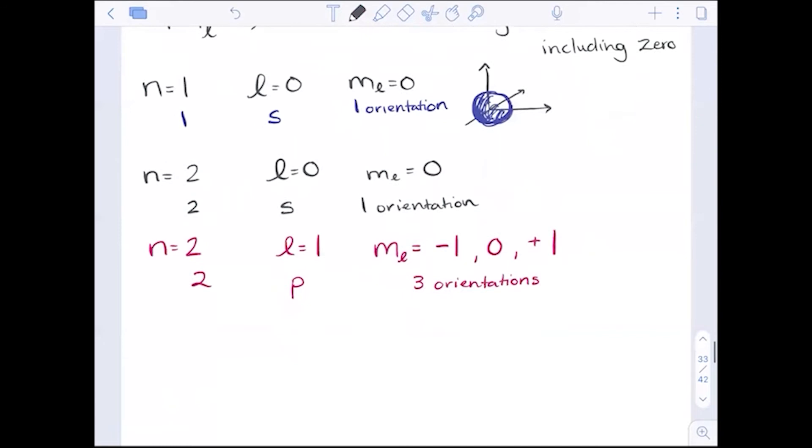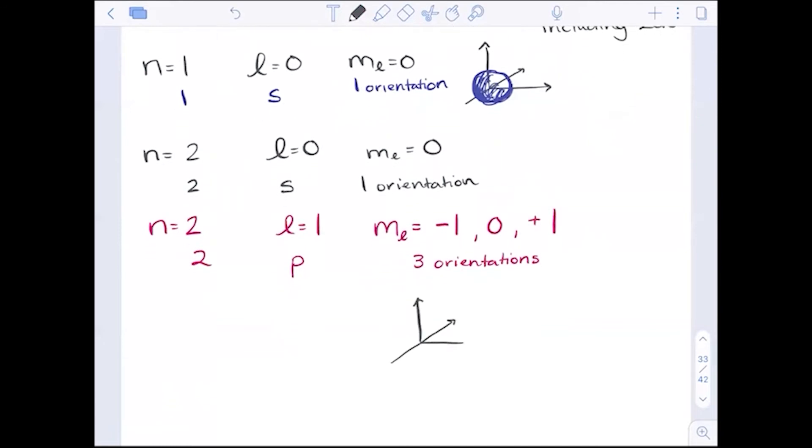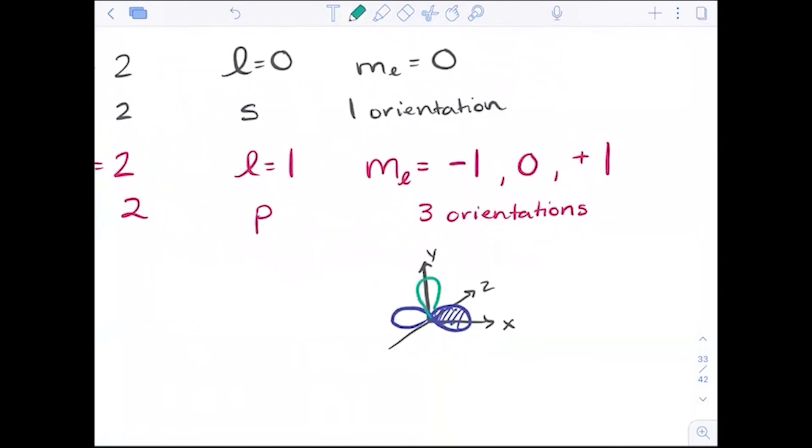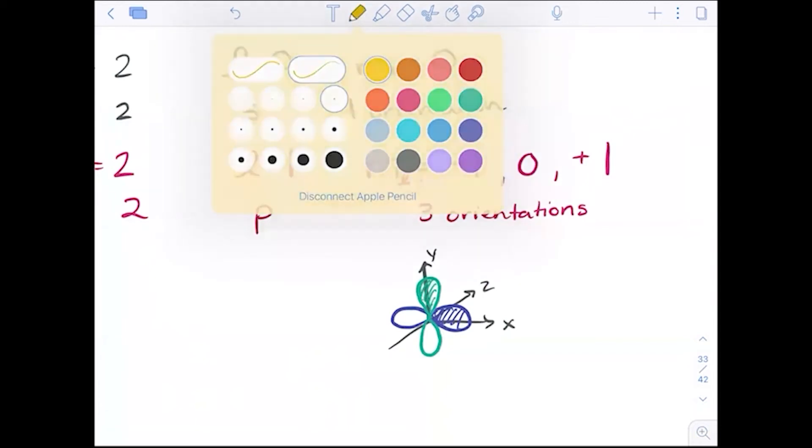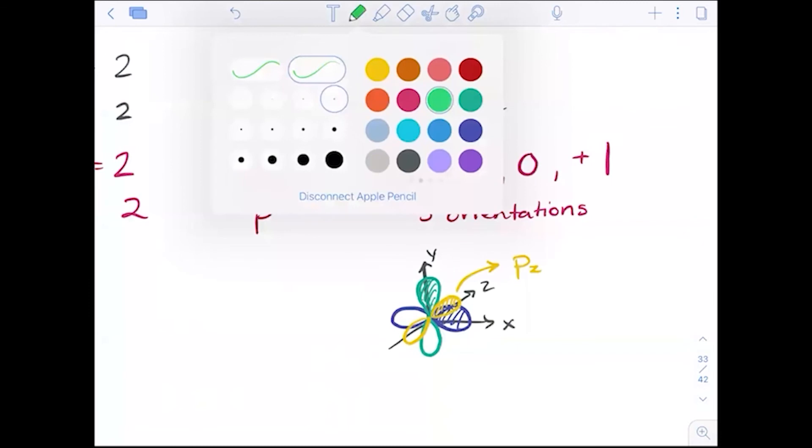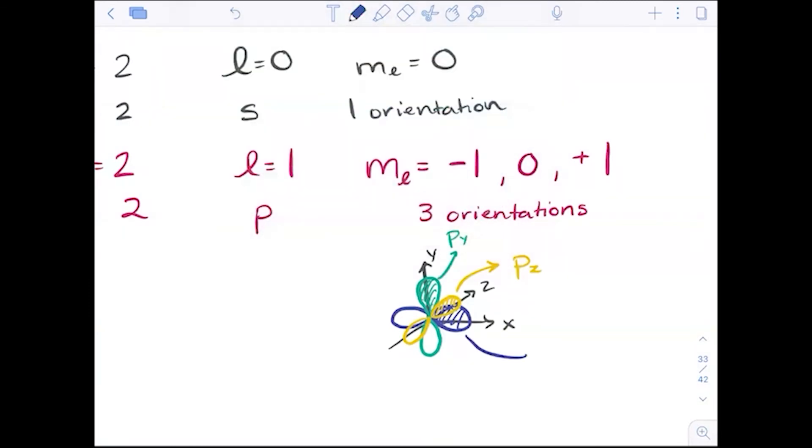What that means for us is if we imagine the p orbitals on an x, y, z plane, I can actually imagine one of the p orbitals being along the x-axis. One of them being along the y-axis. And one of them being along the z-axis. It doesn't matter where your shading goes. It just makes it nice and pretty. This would be what we call the pz. This is our py. And there is our px. The three orientations.